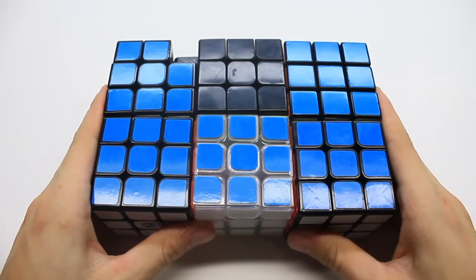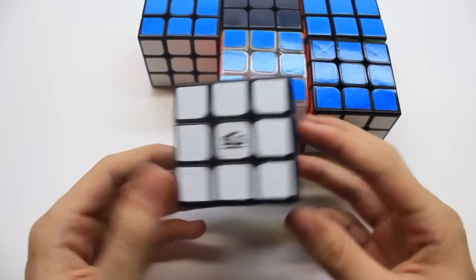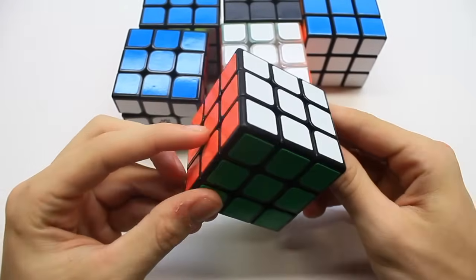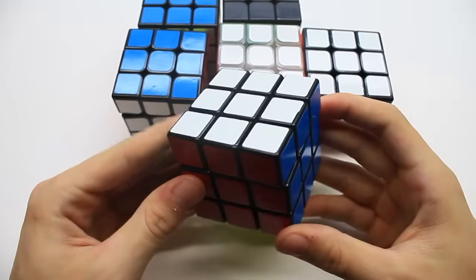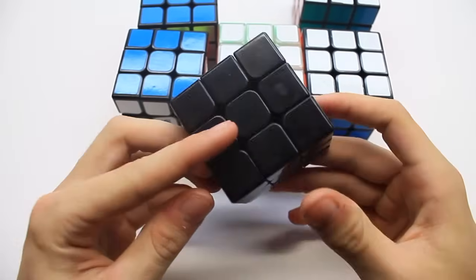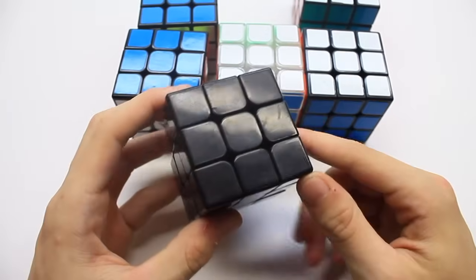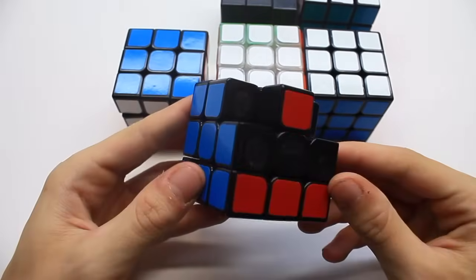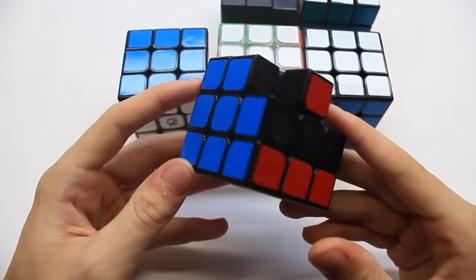Now with some budget cubes. This is the Moyu Mofang Jiaoshi MF3, transparent Guanlong, Yuxin Fire, Shang Shao Wind. This is a Guanlong which has no stickers, I'm gonna do a sticker mod or some kind of mod to this very soon. And then there's this Guanlong that has some missing pieces that I was modding.